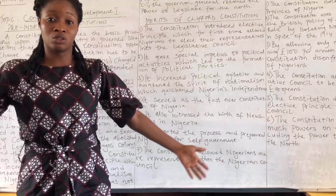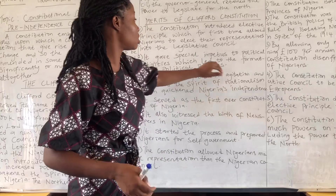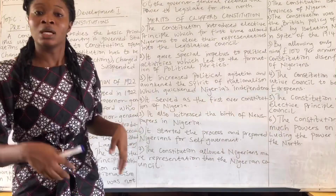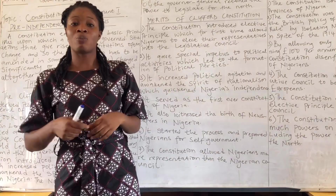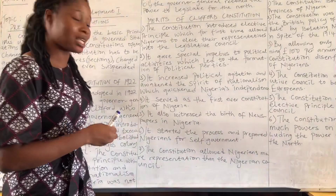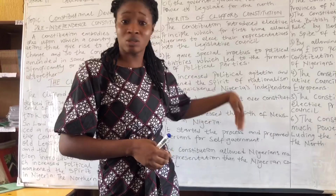Number two: the constitution gave special impetus to political activities, which led to the formation of political parties. Because of this constitution, Nigerian nationalists — Herbert Macaulay and others — decided to form political parties and start contesting elections, so that it would be Nigerians in power. This way they were gradually gaining influence within the British council.